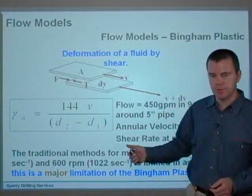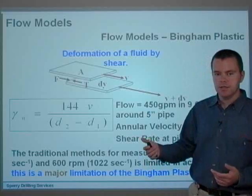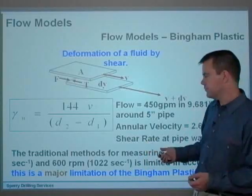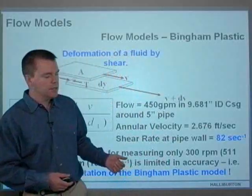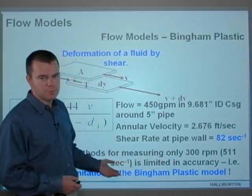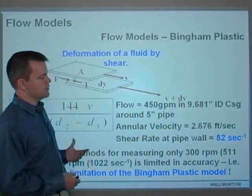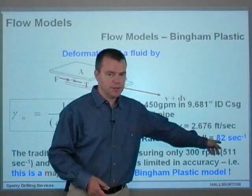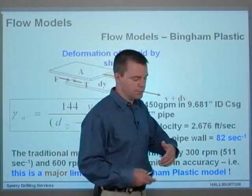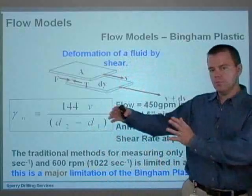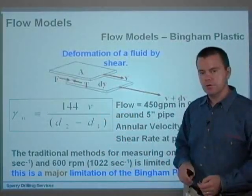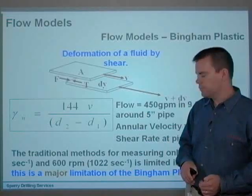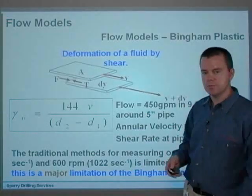Now traditional methods for only measuring the 300 RPM and the 600 RPM, giving you 511 per second and 1022 per second, basically is a limited inaccuracy, because as you can see, 511 per second is quite significantly higher than 82 per second. And so you're looking at shear rates that are much higher than the actual shear rate at the pipe wall or the annular wall. So it's a major limitation of the Bingham Plastic model.